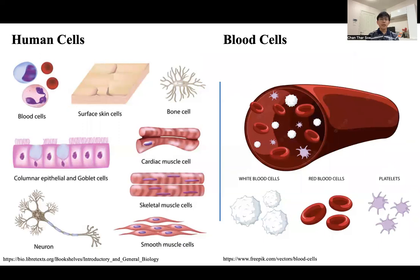In the human body, there are many different types of cells. The first one is blood cells, surface skin cells, bone cells, corneal epithelial cells, blood cells, cardiac muscle cells, skeletal muscle cells, smooth muscle cells, and neural cells. This is just a generalization of the different types of cells in our body.